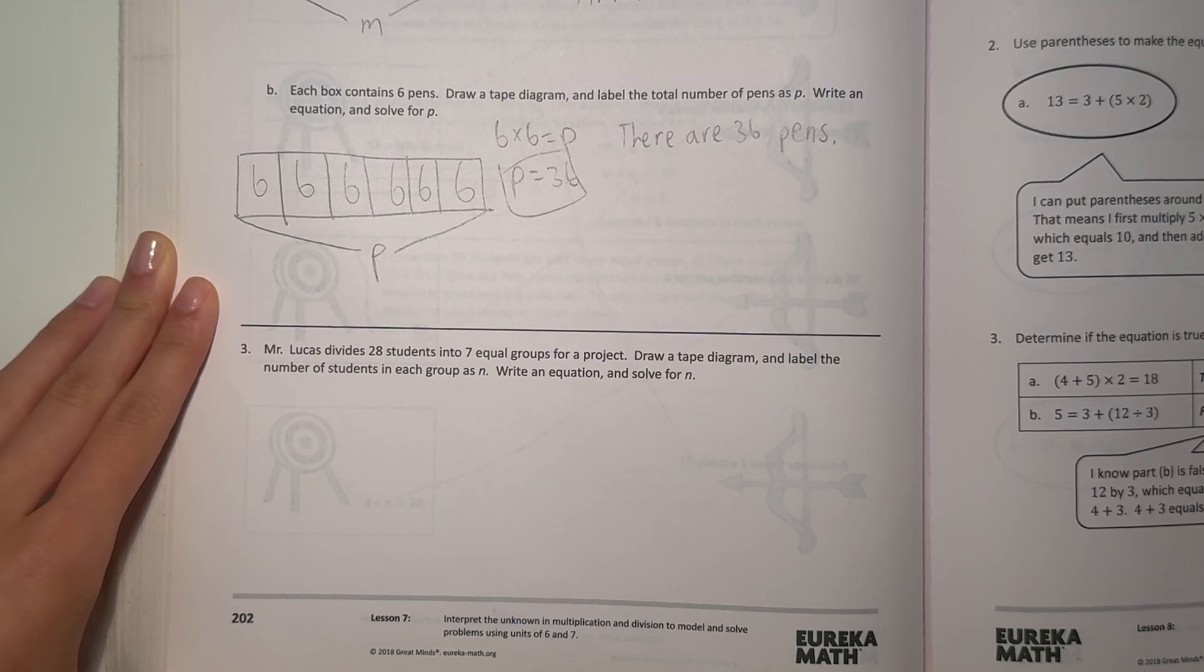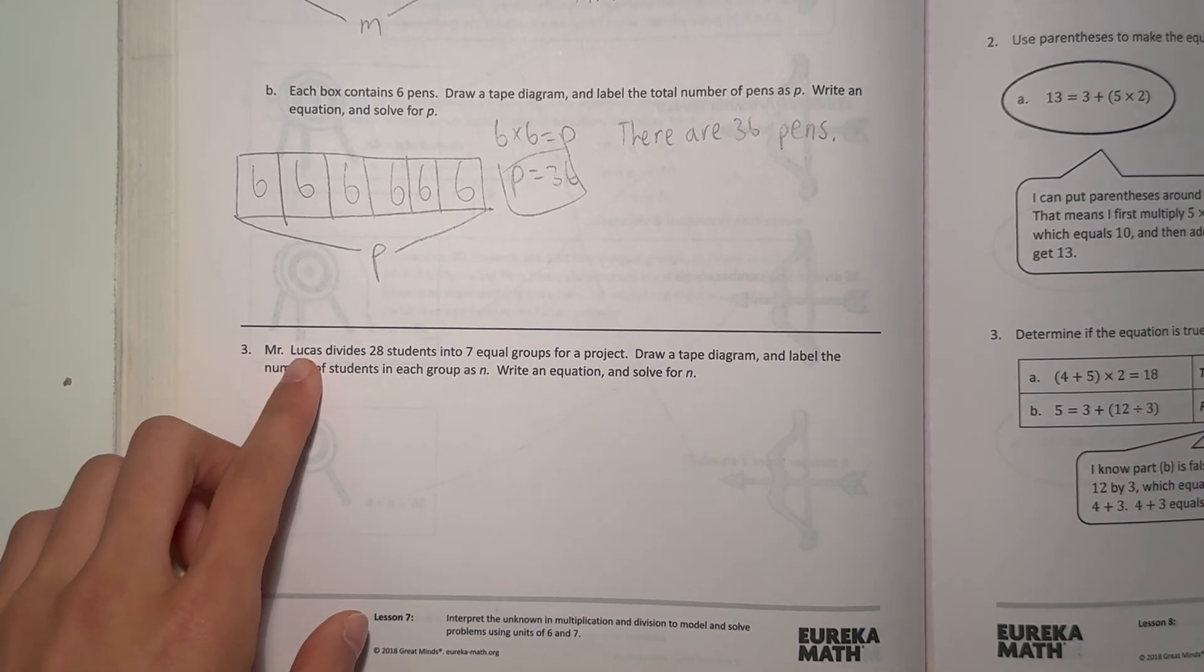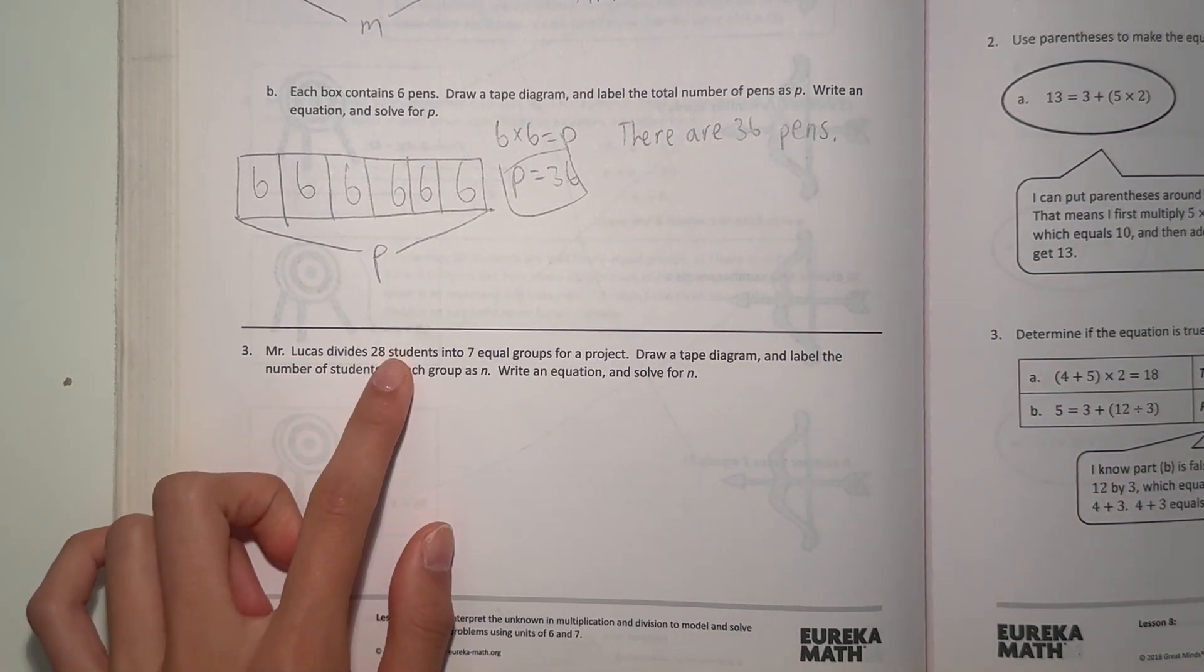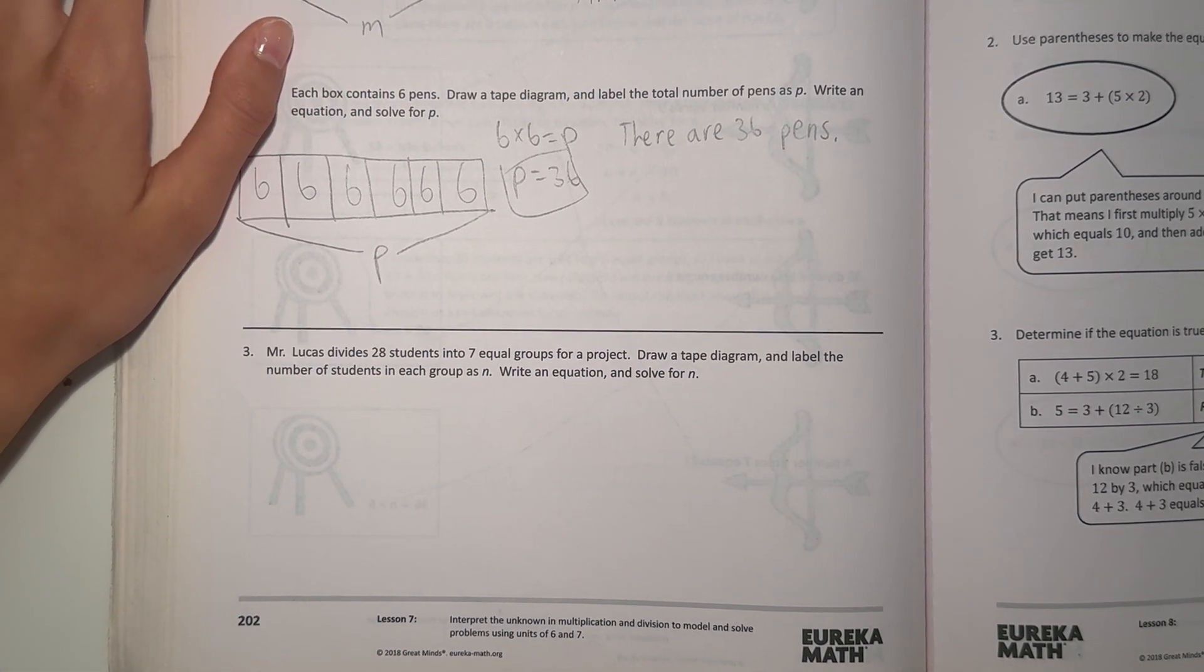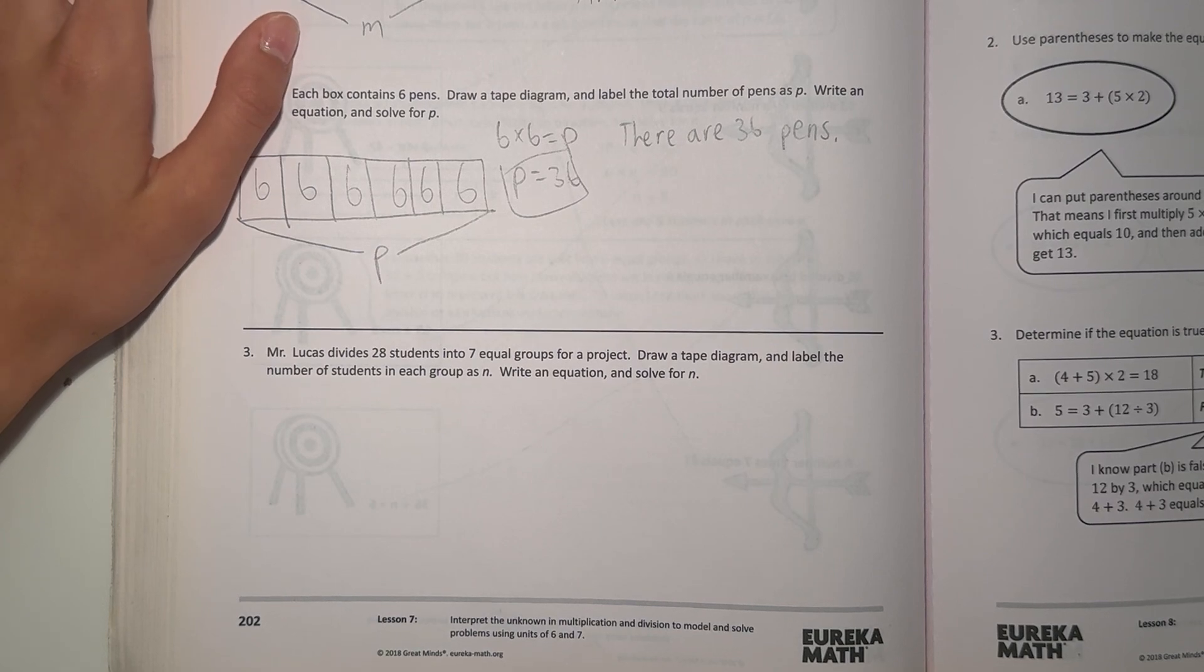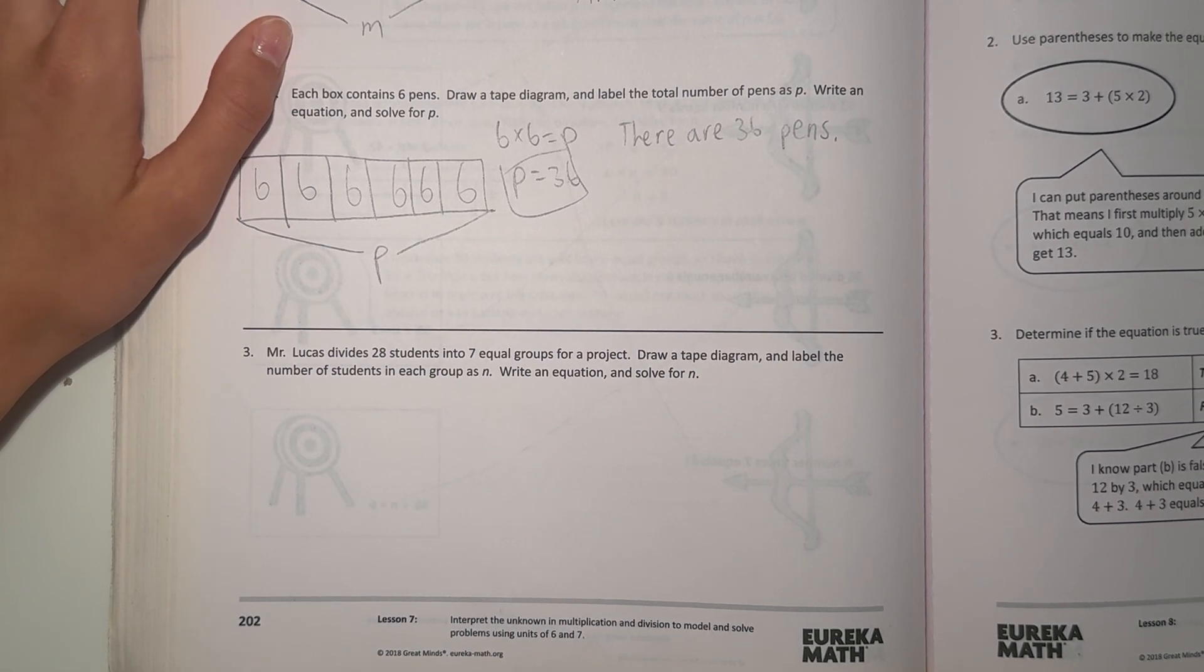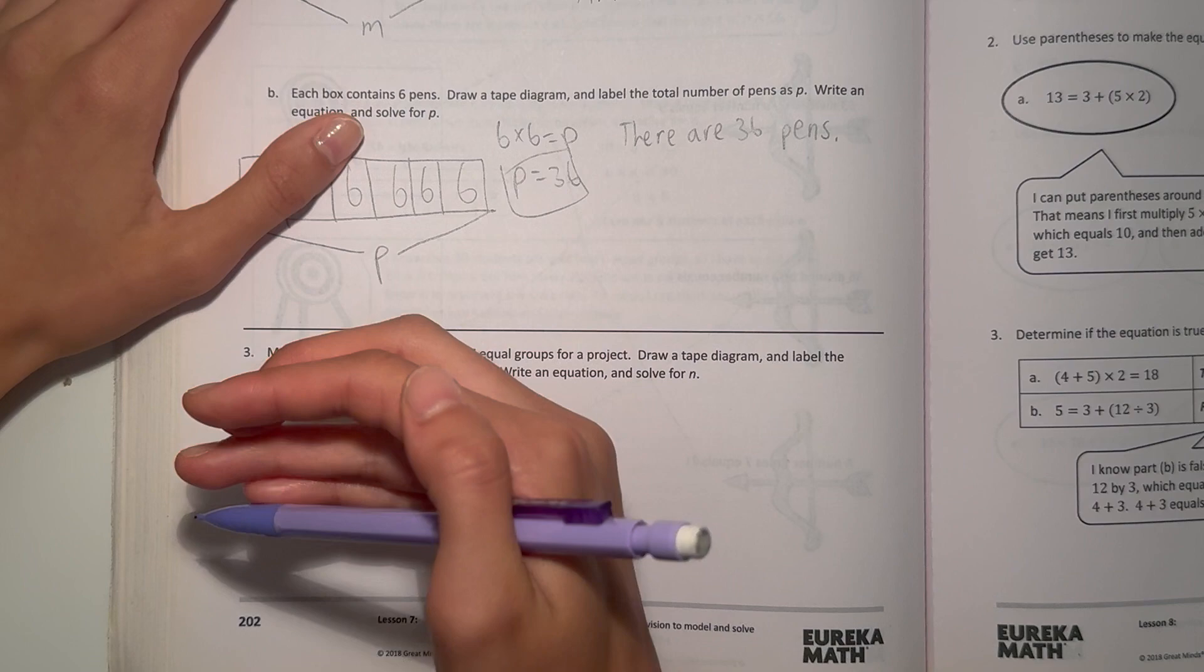Alright, and number 3. Mr. Lucas divides 28 students into 7 equal groups for a project. Draw a tape diagram and label the number of students in each group as N. Write an equation and solve for N. Alright.